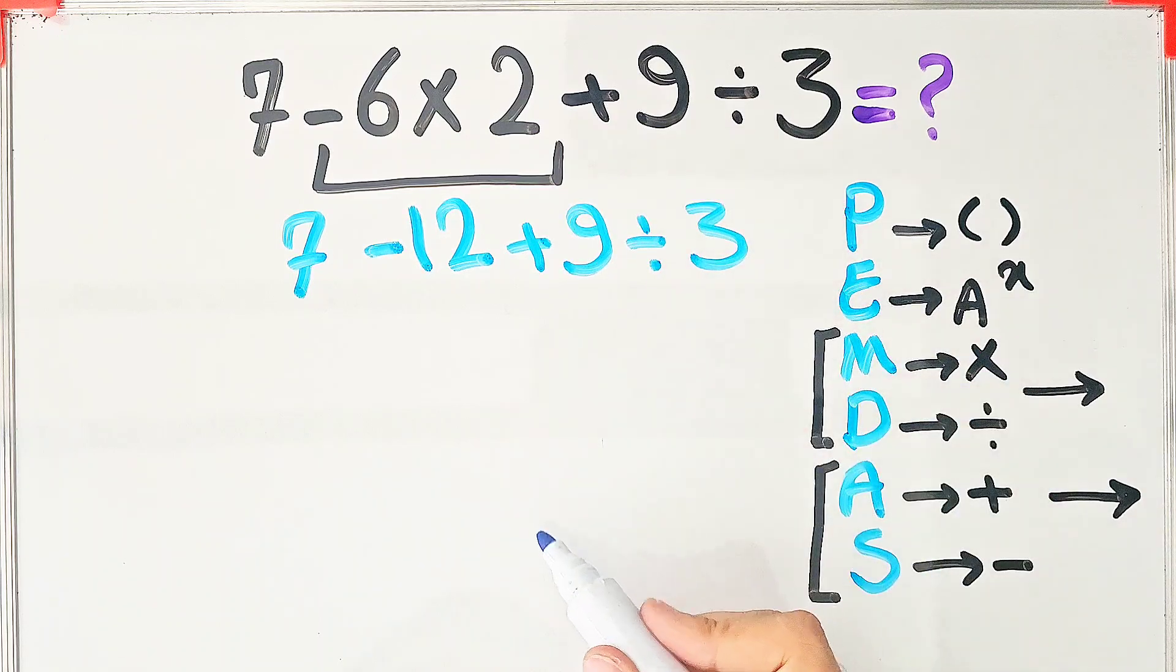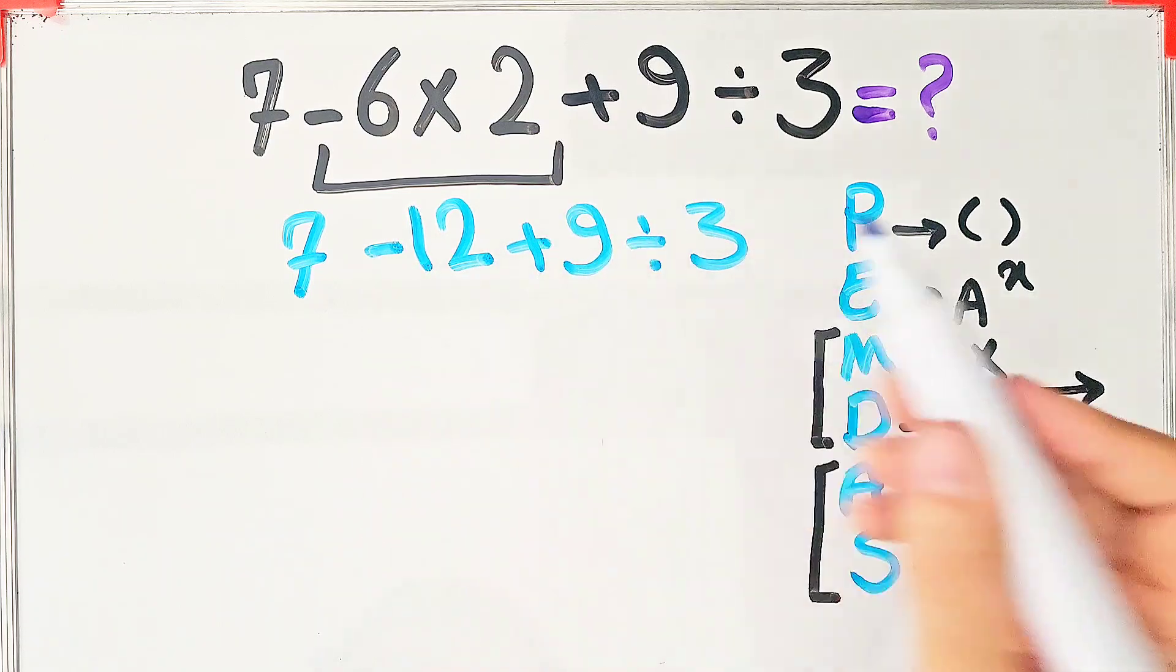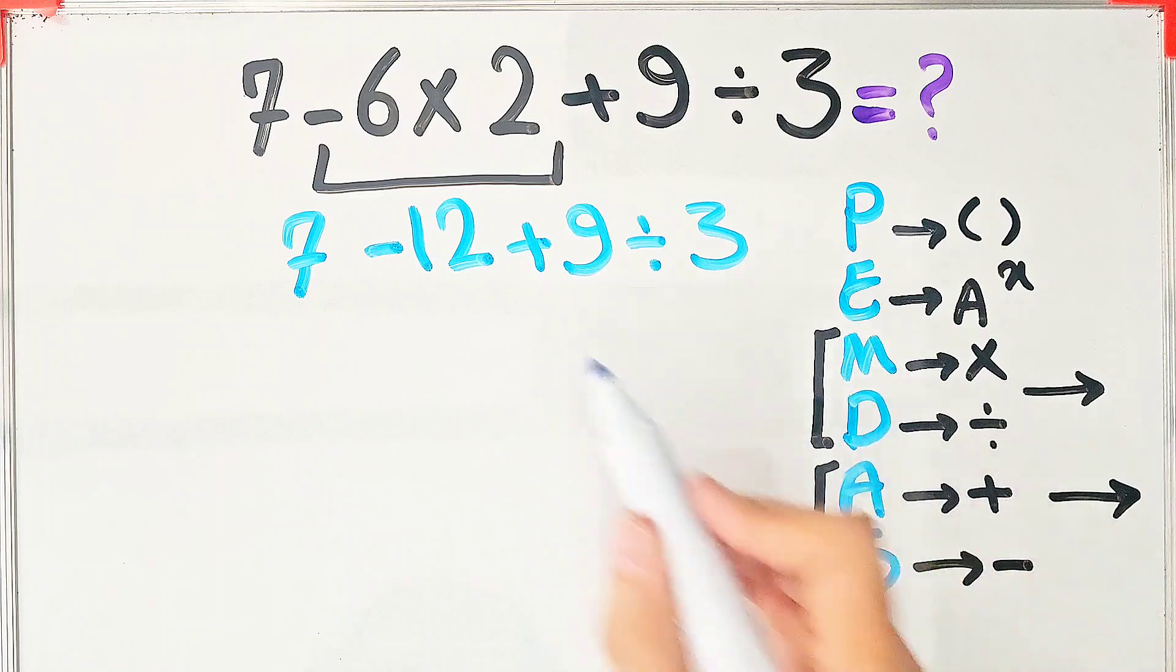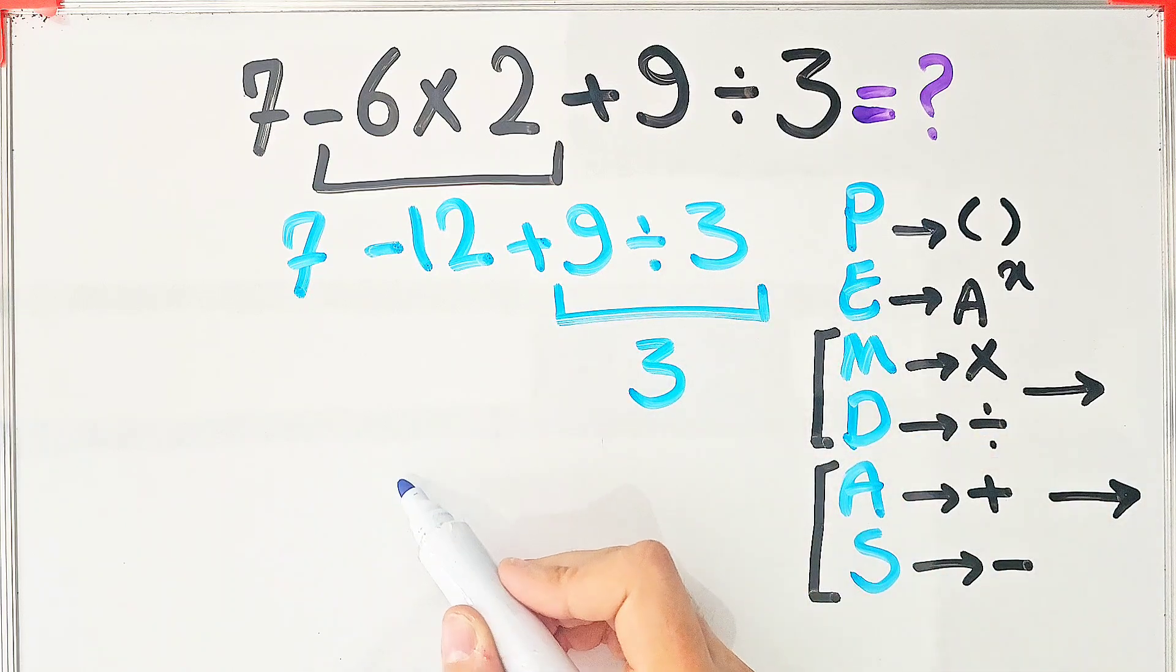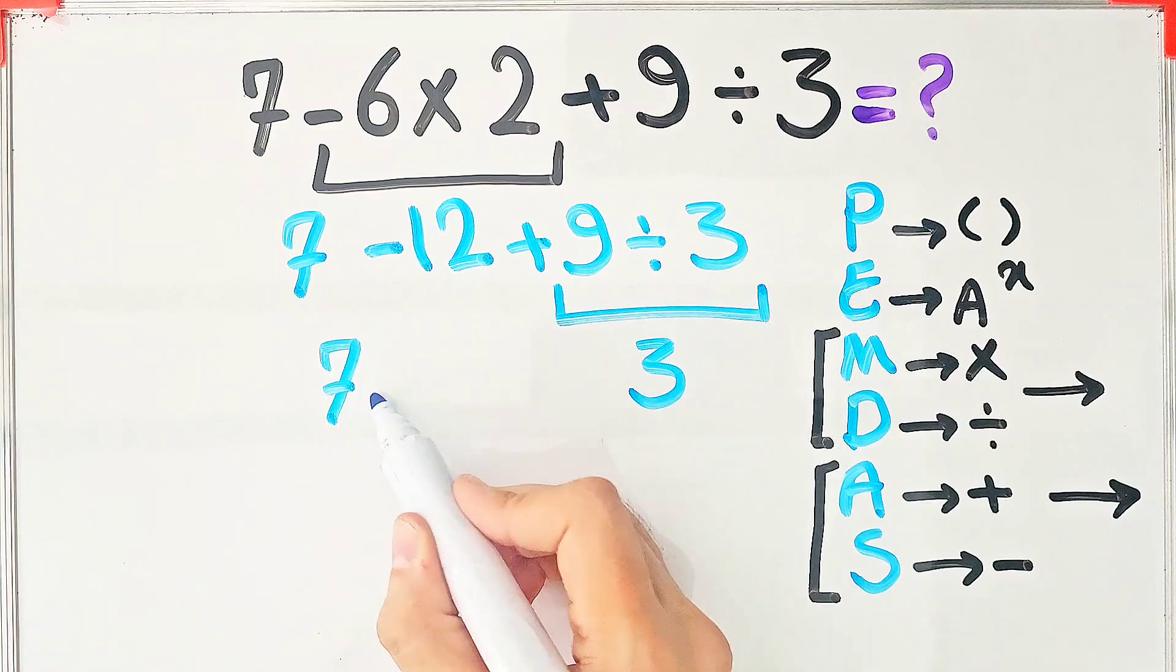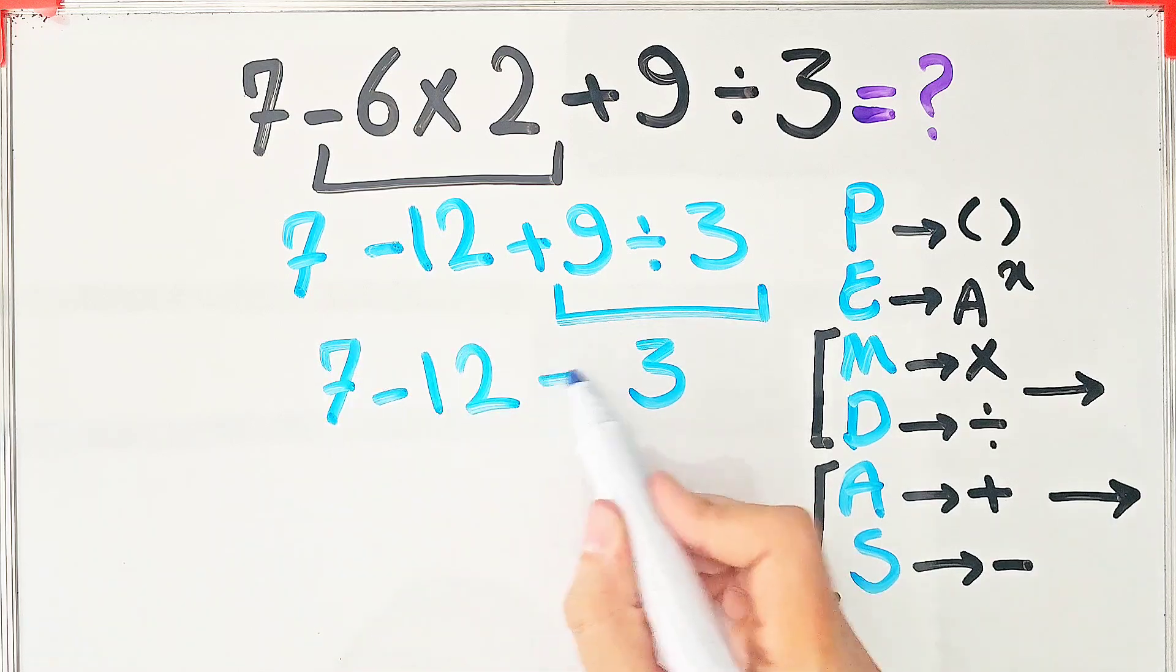In this step, we do division because the division has higher priority than addition and subtraction. 9 divided by 3 equals 3. Now we have 7 minus 12 then plus 3.